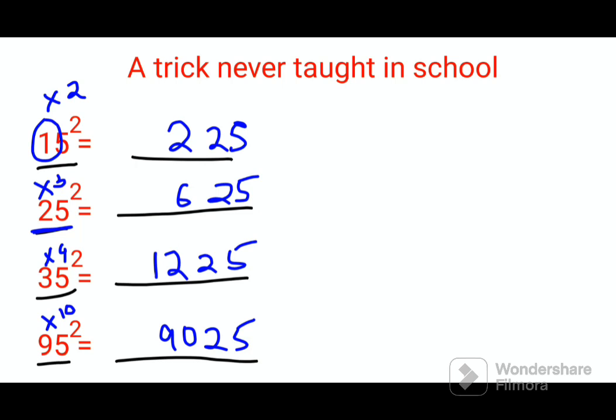If you had something like 125 square. Here also things would be so much easier because the 25 is your last part, and then you just multiply 12 into 13, that is 156.